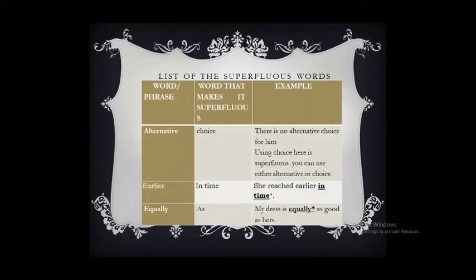Let's look at some tables of superfluous words. 'Alternative choice' — alternative means you choose from both, either this or that. So using 'choice' again makes it superfluous. The correct form is: 'There is no alternative for him.' Also, 'earlier in time' — earlier means something done before an expected time, so using 'in time' again makes it superfluous.